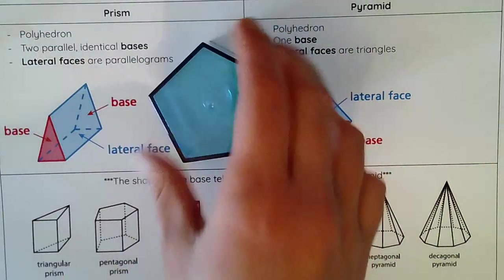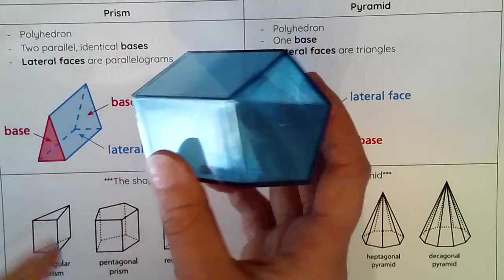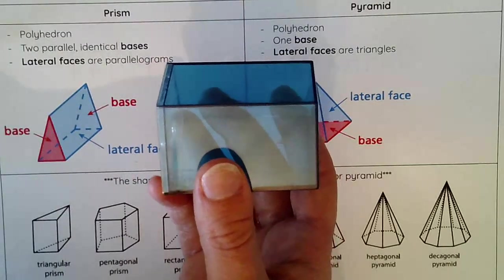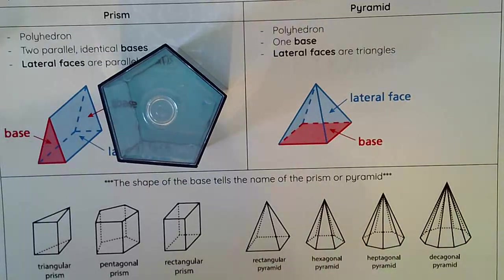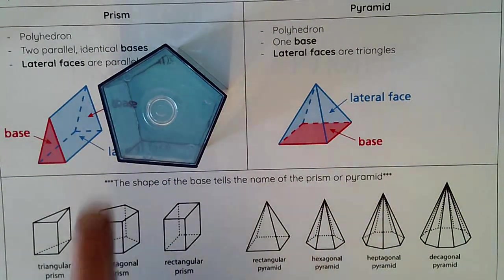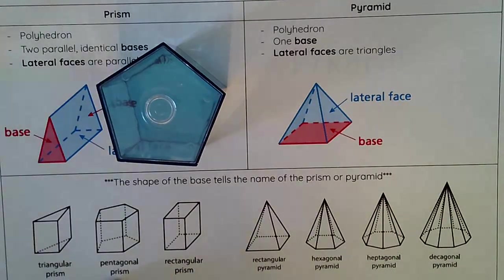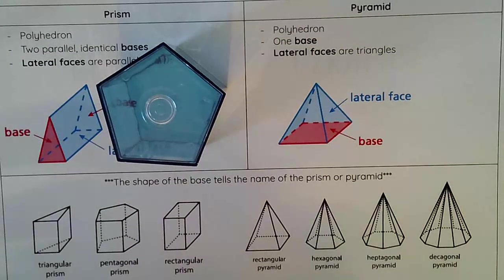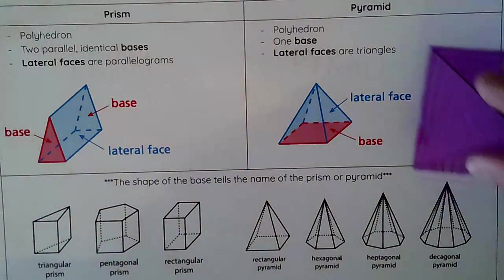One more prism: I can see that there are two bases here and all of my lateral faces are rectangles. Looking at the base, I count one, two, three, four, five sides — so the base is a pentagon. Therefore this is a pentagonal prism.